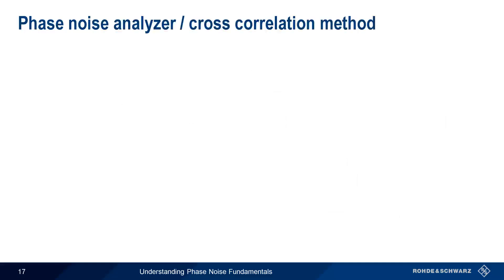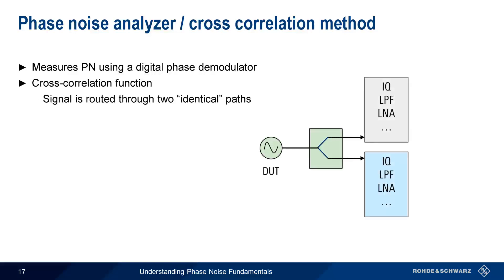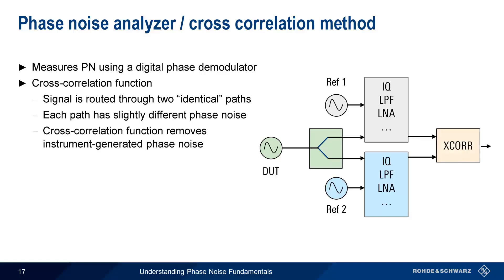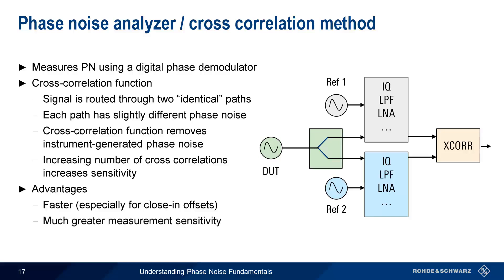Although it presents results in the same way, a phase noise analyzer measures phase noise differently than a spectrum analyzer. The first difference is that phase noise analyzers measure phase noise directly, typically using a special digital phase demodulator. The other important difference is related to the cross-correlation function in modern phase noise analyzers. In cross-correlation, the incoming signal from the DUT or device under test is routed through two identical measurement paths in the instrument. These identical paths have independent oscillators, each of which has slightly different or uncorrelated phase noise. These two paths feed a cross-correlation function that can then remove the uncorrelated phase noise generated by the instrument, allowing a more precise and more sensitive measurement of the phase noise in the signal from the DUT. Increasing the number of cross-correlations further increases the sensitivity, allowing the measurement of extremely low levels of phase noise. Phase noise analyzers therefore have the advantage of being much faster, especially when measuring close-in offsets, as well as having much greater measurement accuracy and sensitivity.